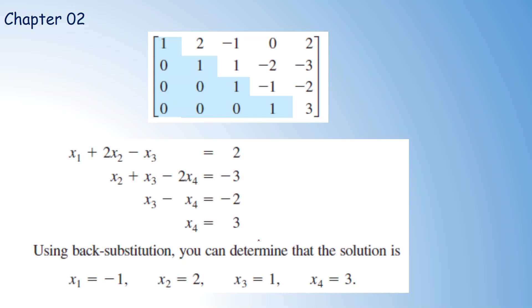From the last equation, x4 equals 3. Substituting x4 equals 3 into the third equation gives x3 equals x4 minus 2, so x3 equals 1. From the second equation, x2 equals minus 3 plus 2x4 minus x3. Substituting x3 equals 1 and x4 equals 3 gives x2 equals 2. From the first equation, x1 equals 2 minus 2x2 plus x3. Substituting x2 equals 2 and x3 equals 1 gives x1 equals minus 1. That is exactly backward substitution.